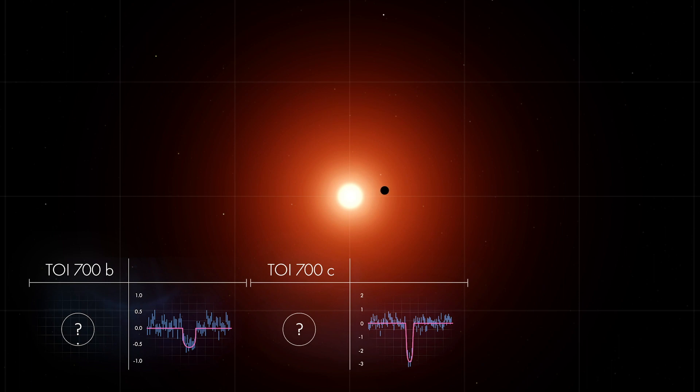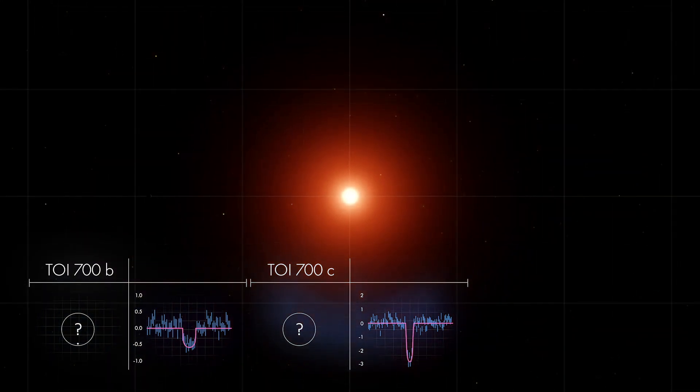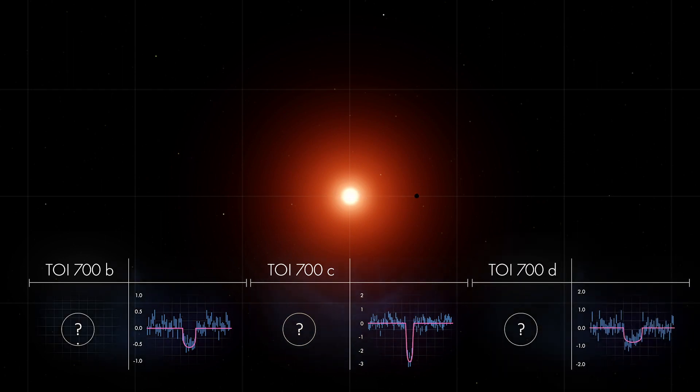The deeper, shorter transit means the planet is larger than the first, and the plane of its orbit is slightly tipped. A final set of transits showed TOI-700d orbiting even farther out.